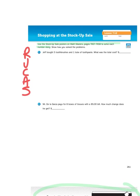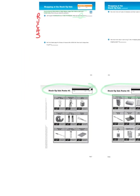So let's read that problem again. Jeff bought five toothbrushes and one tube of toothpaste. What was the total cost? I need to come up with an addition problem, because when I see the word total, that's another word for add. Five toothbrushes and one tube of toothpaste. So let's go ahead and look at our poster.